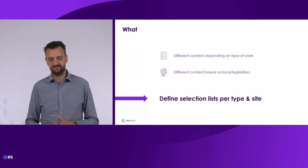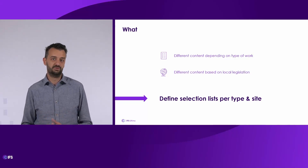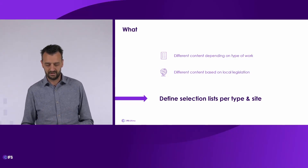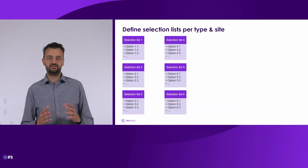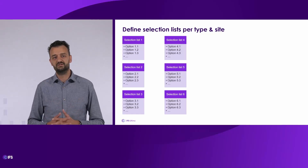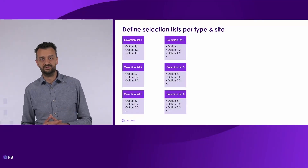We do understand that these two extra dimensions make it a little more complex to set up your work permits, so I'm going to show you how this will work. Let's start with the current situation. In this simplified situation we have six selection lists. In the current situation, all these selection lists are always added to all permits. If you want to keep working that way, that's perfectly possible also when the new features are released. But you will have the option to differentiate the content based on the type of work.